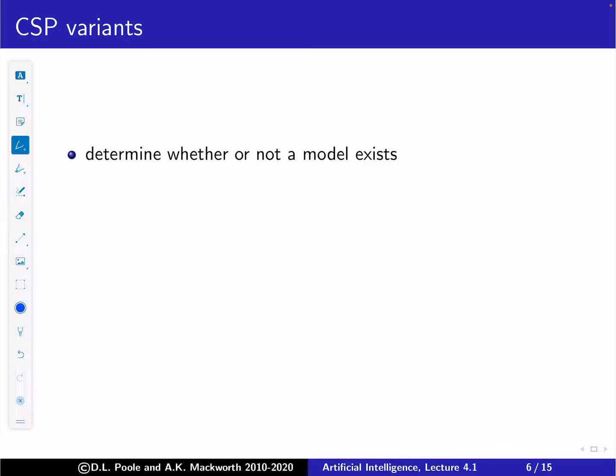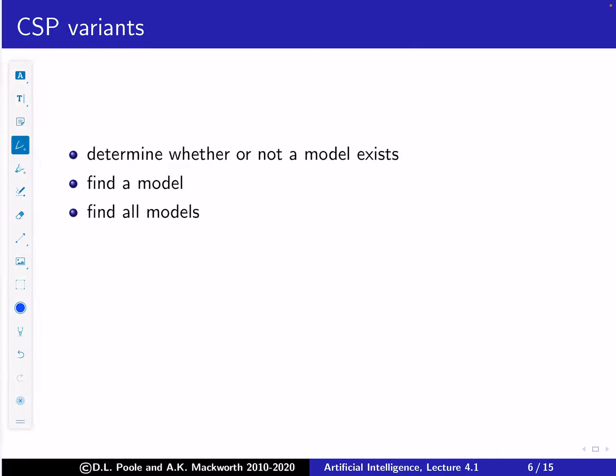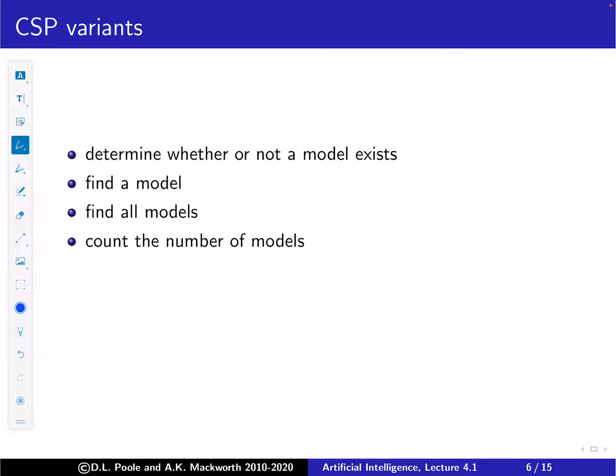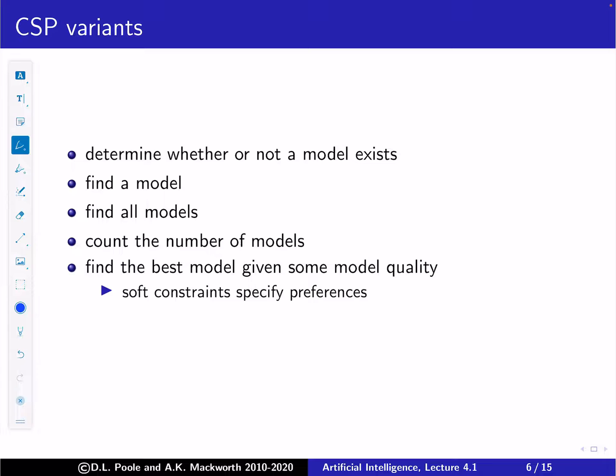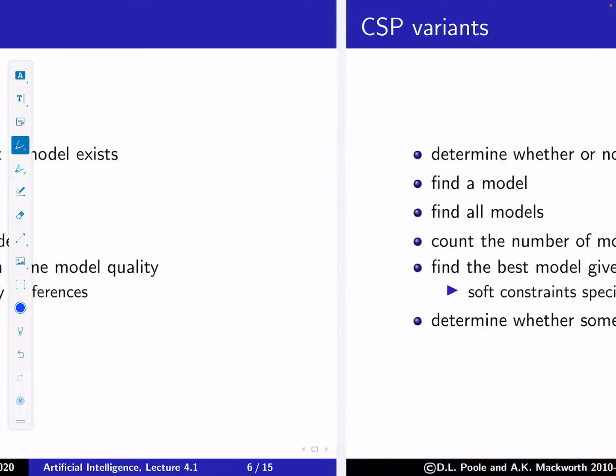There are different things we might want to do with a CSP: determine whether a model exists, find a model, find all models by enumerating them, count the number of models, or find the best model given some quality measure. We can also have soft constraints which specify preferences, in addition to hard constraints which specify what can and cannot be done.